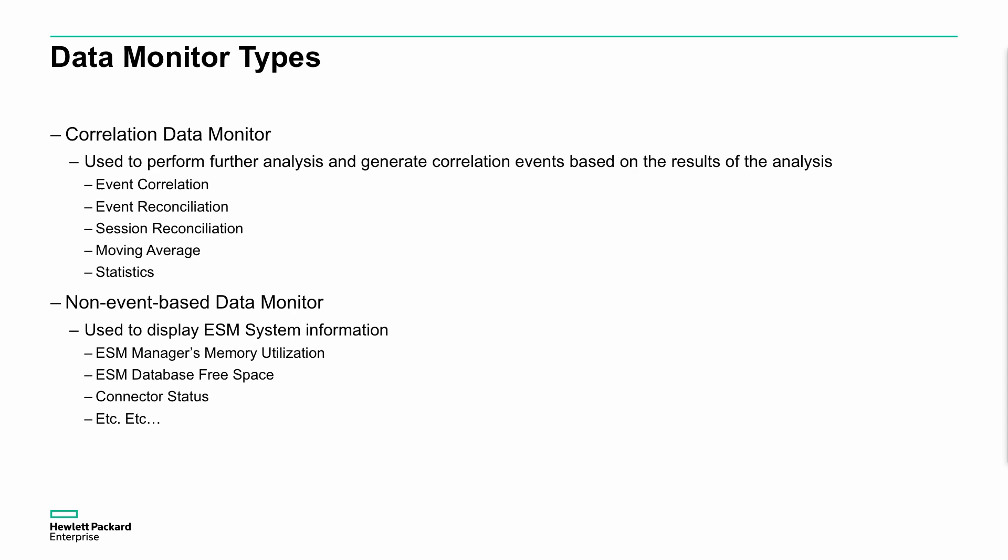We can do correlation data monitors. We can do further analysis of things based on event correlation, event reconciliation, session reconciliation, moving average, and statistics. And we can do non-event-based data monitors, which are very specific around ESM system information. Those are for system information only and would be for administration and monitoring only. Typically, most organizations are going to be looking at the correlation data monitors, where we're looking at event correlation, event reconciliation, moving average, and statistics type calculations, where the system itself is going to be generating some events based on a calculation.